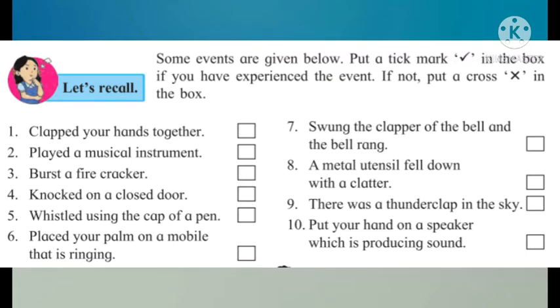First, clapped your hands together. Second, played a musical instrument. Third, burst a firecracker. Fourth, knocked on a closed door. Fifth, whistled using the cap of a pen. Sixth, placed your palm on a mobile that is ringing. Seventh, swung the clapper of the bell and the bell rang. Eighth, a metal utensil fell down with a clatter. Ninth, there was a thunderclap in the sky. And tenth, put your hand on a speaker which is producing sound.